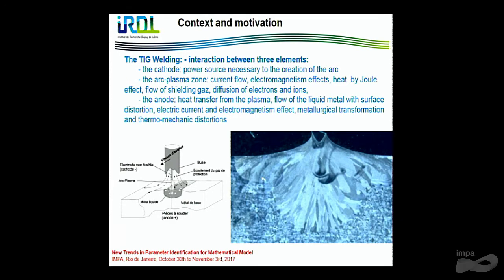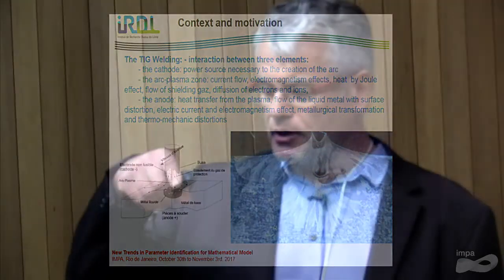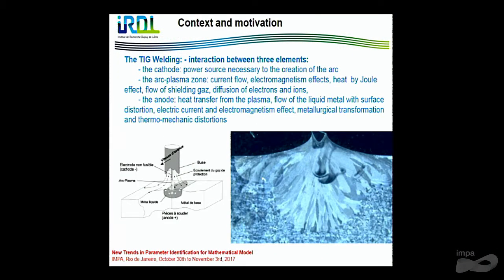The context and motivation. If we look at TIG welding, we are with a static welding. At the beginning, we have contact between the process and the steel. And during the fusion — the creation of the fuse zone — we go up in front of the steel. If we look at the interaction between the process and the steel, we have three zones: the first zone is the cathode, where we have the power sources to create the arc. After that, we have the space between the process and the steel, where we have an arc plasma zone with current flow, electromagnetism effects, heat by Joule effect, flow of shielding gas, and diffusion of electrons and ions.